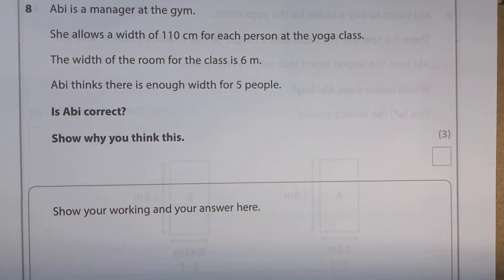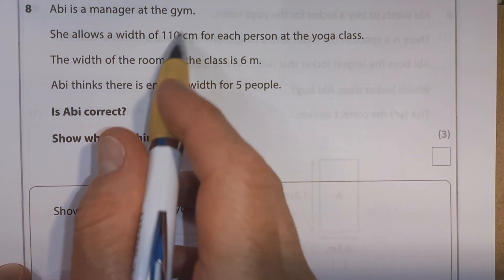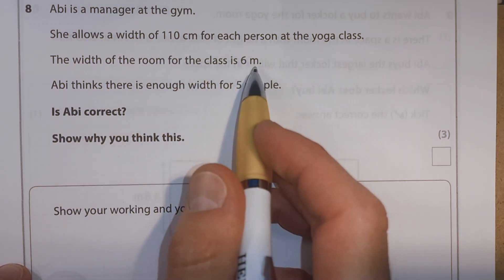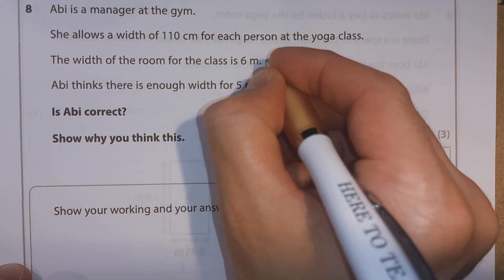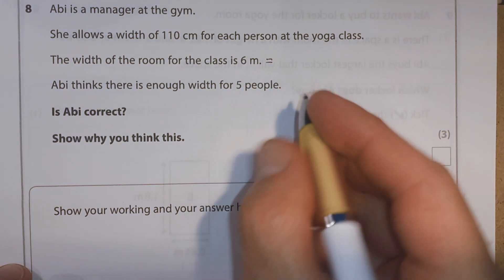Abbey is a manager at the gym. She allows a width of 110 centimetres for each person at the yoga class. The width of the room for the class is 6 metres. Abbey thinks there's enough width for five people. Is Abbey correct? Show where you think this. Right, well, we've got different measurements. We've got centimetres or different units. Centimetres and metres. Let's turn everything into the same units. Let's turn this into centimetres.